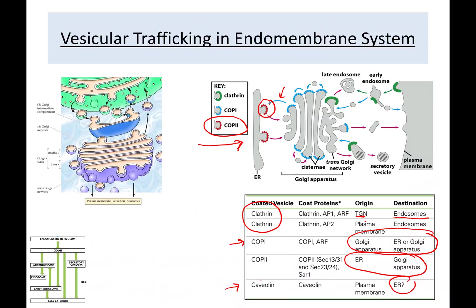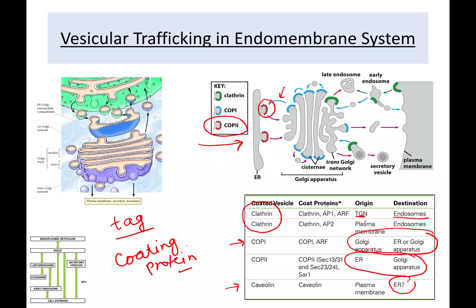So there are two key pieces of information: specific tags on proteins and specific coating proteins on vesicles work together to help a protein get to its final destination. That's the overall overview of how proteins are sorted within the endomembrane system.